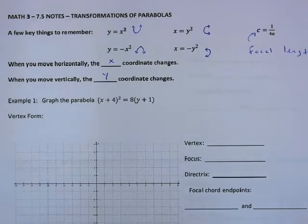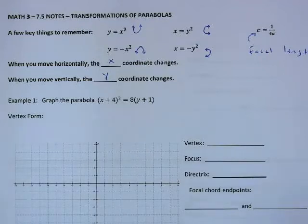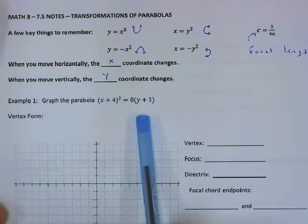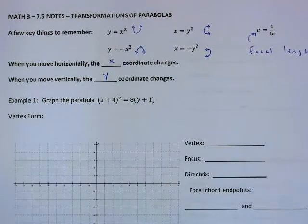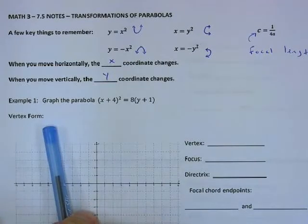Let's jump right into Example 1. This is pretty much the exact same thing we were doing in Section 7.4, but the vertex is just going to be in a different location. We want to graph this parabola, and the first thing we want to do is get it into proper vertex form.